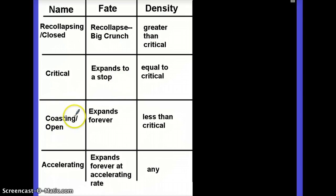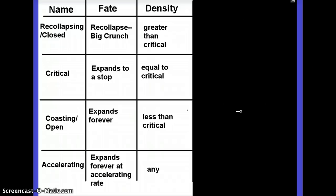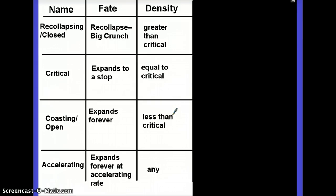Another one is called coasting or open. That's the sort of expanding forever kind of situation at a decelerating rate, or maybe even at the same rate, but we expand forever. That's a less than critical density. So in this case, the expansion is winning out over gravity. Gravity is not strong enough to overcome that expansion and make it stop and turn around.